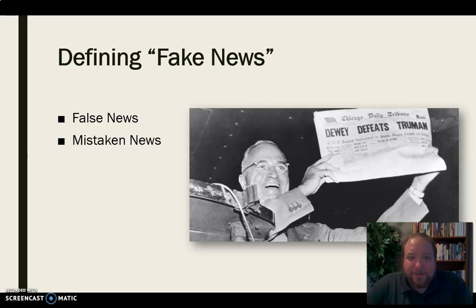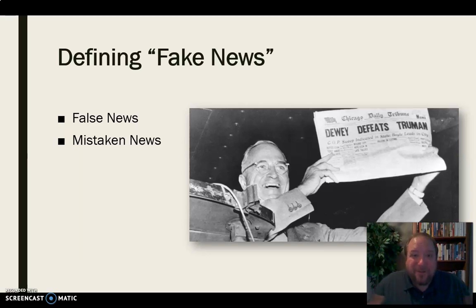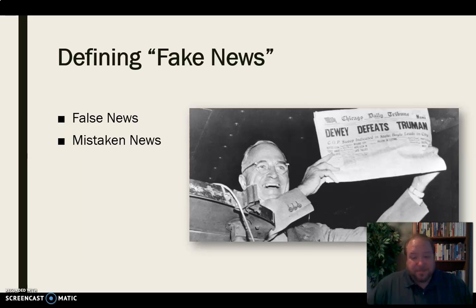Another kind of news is mistaken news. Sometimes journalists get it wrong. The most famous example is 'Dewey Defeats Truman' — the famous headline where everybody expected Dewey to win, so they printed that in advance. You could almost have the same thing in the 2016 election where everybody expected Hillary Clinton to win. That was a mistake, and news organizations issue corrections — that's mistaken news.